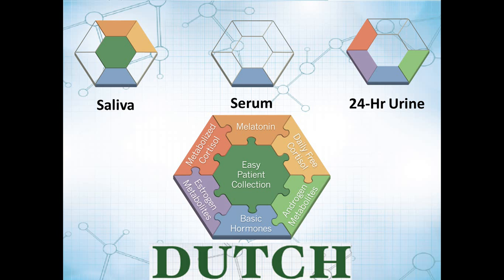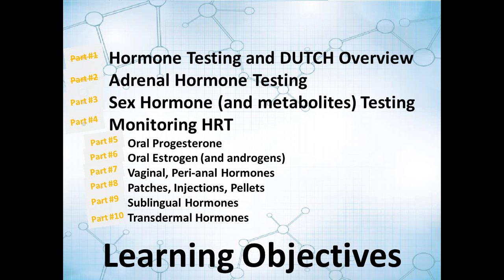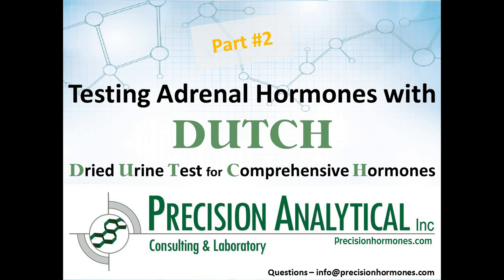So that concludes part two of this video series. If you'll move on to part three, then we'll dig through the sex hormones, your estrogens, your androgens, progesterone, and look at the advantages of the Dutch testing, but also look at what some of the other tests have to offer for those hormones. So this concludes part two of our tutorial. And we thank you for your time and look forward to you watching the rest of the series.